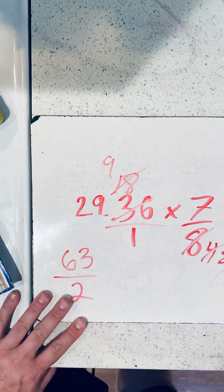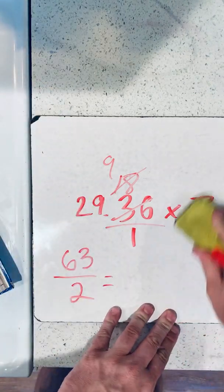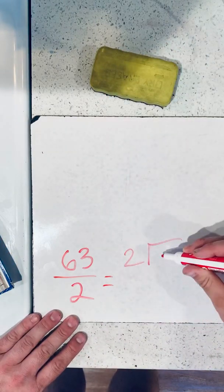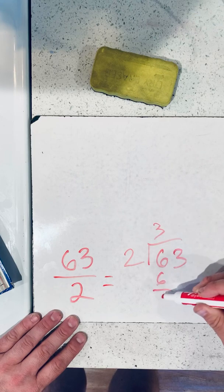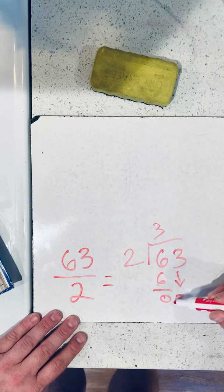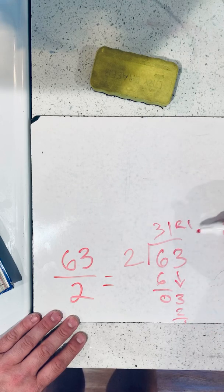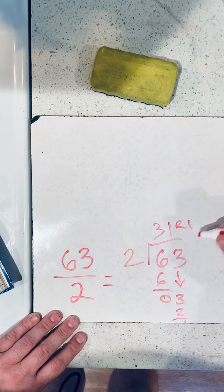Now, we need to simplify. So let's follow along. So 2 goes into 63, 3 times 6, 0. Bring down the 3. 1. And your 1. The answer for this one would be 31 and 1 half.